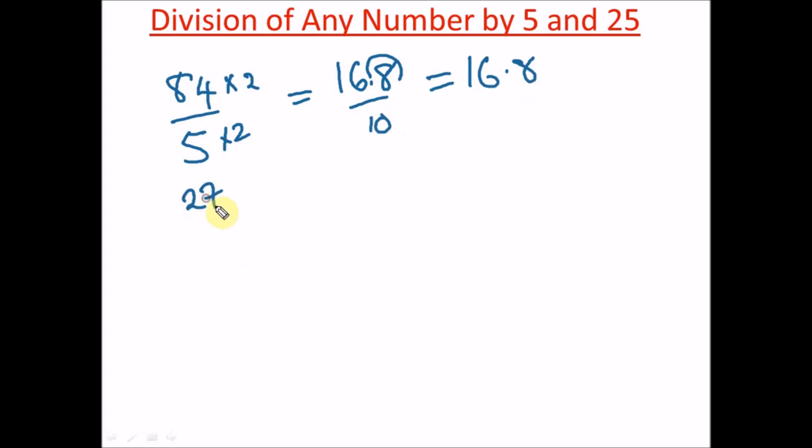Let's say we have 27 divided by 5. All you need to do is multiply this by 2, and that gives us 54, and divide by 10. Moving the decimal place once, you have 5.4. You can try this for other examples.